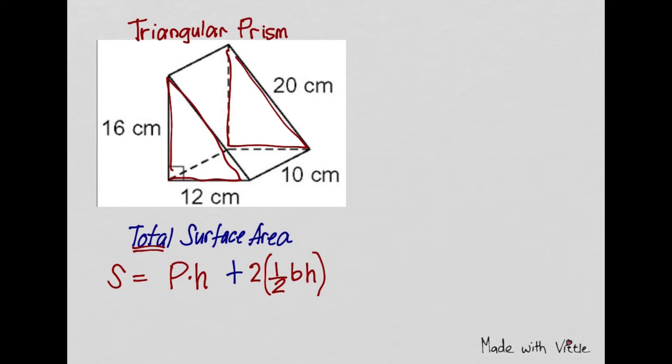Now let's do substitution. We said in class that the perimeter of one of the triangles is going to be the letter P here. So we have to add the three side lengths of one triangle, then multiply by the height.